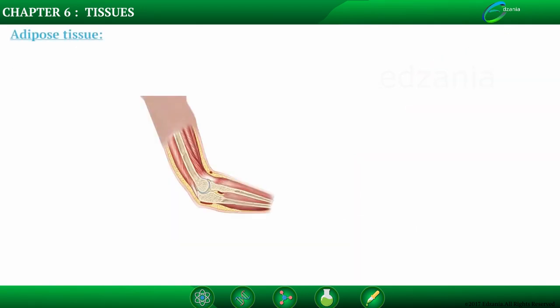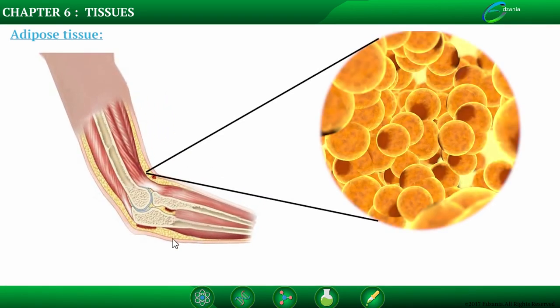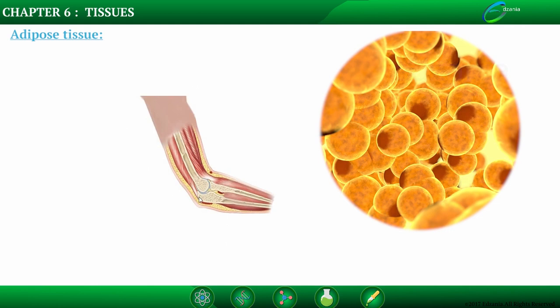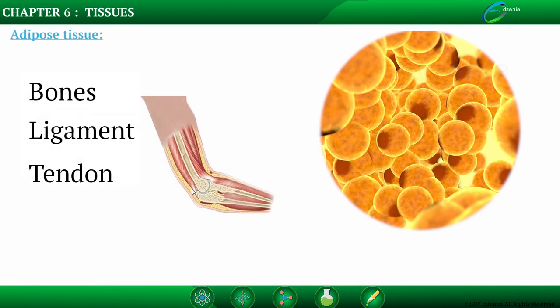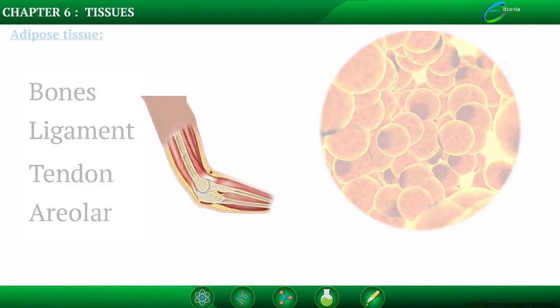Adipose tissue is the fat-storing connective tissue found below the skin and between internal organs. Its cells are filled with fat globules (visible as yellow bubble-like structures). Storage of fats acts as an insulator for other connective tissues such as bones, ligaments, tendons, and areolar tissue.